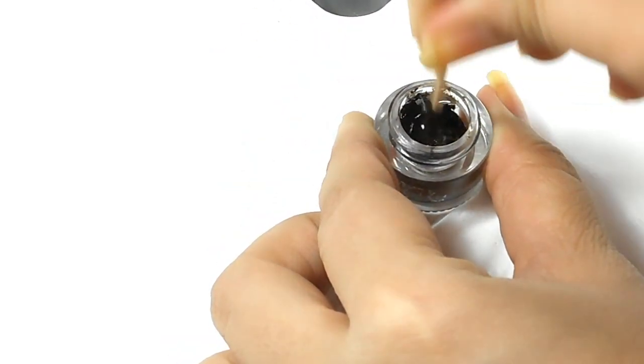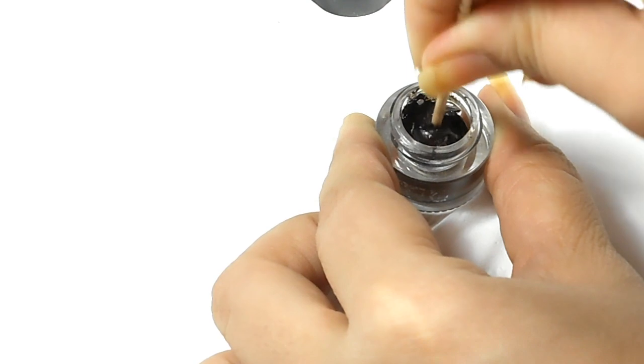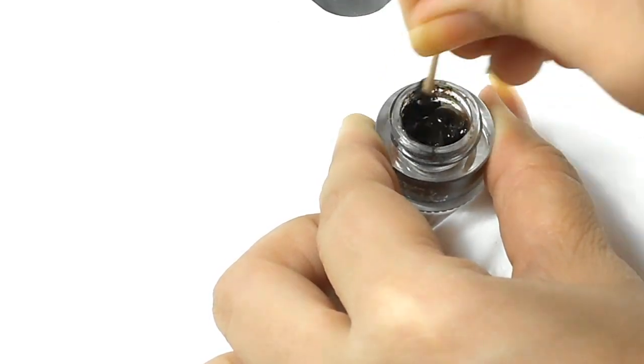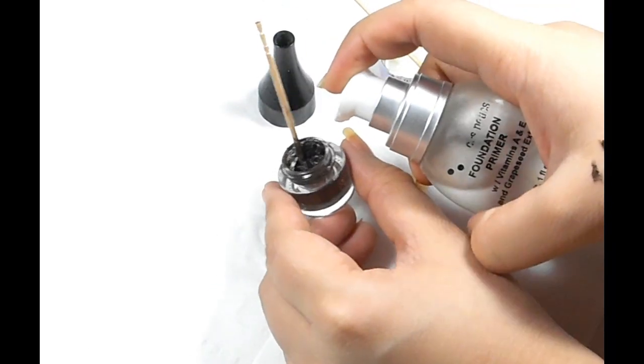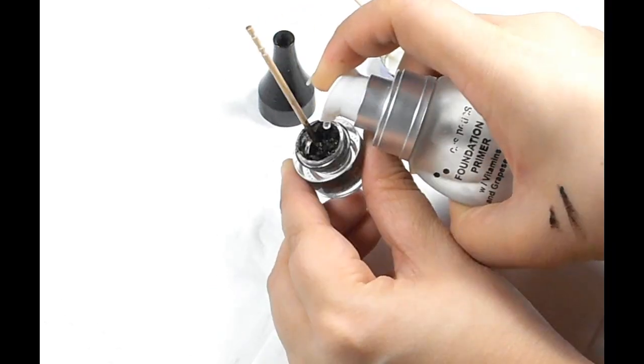Now give it a good mix so that it mixes well with your gel eyeliner. It can get a little messy, so make sure you have a tissue paper or towel, something underneath your working area.